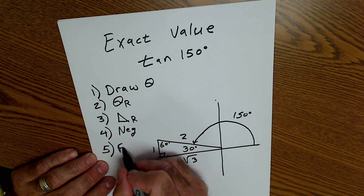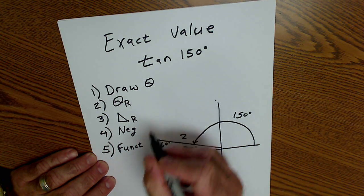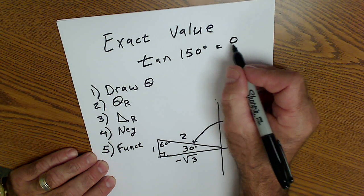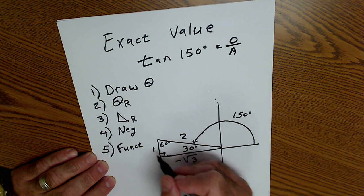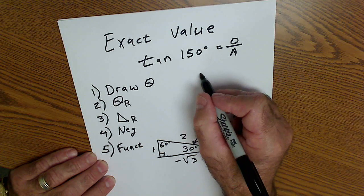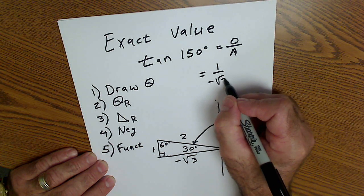Step five, look at the function. So tangent is opposite over adjacent. So I'm looking at this triangle. I have the opposite over the adjacent. So tan of 150 is one over negative root three.